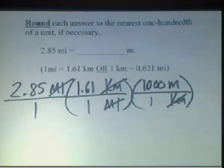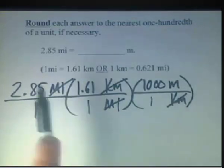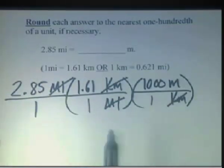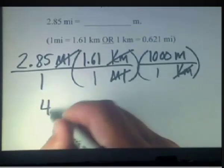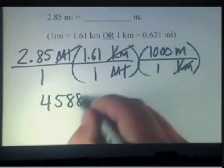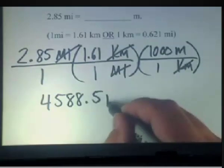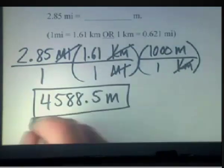And nicely those kilometers will cancel out. So this is a multiplication problem. We're going to multiply straight across the top here. You can do this by hand or on your calculator. In doing so you'll come up with a value of 4,588.5. And in this case it's exact, so there are no rounding issues involved.